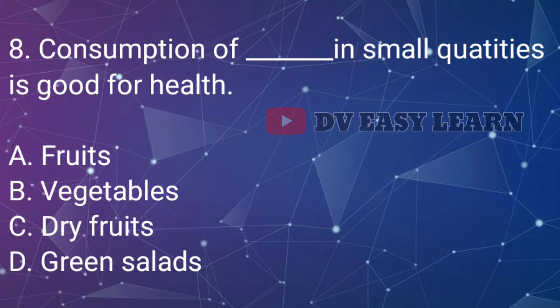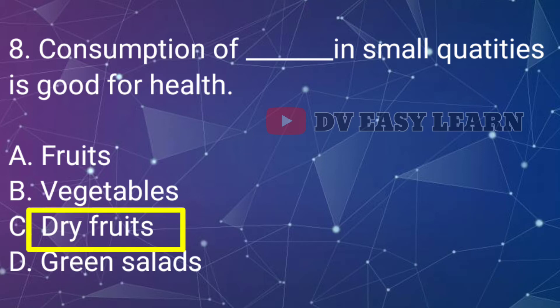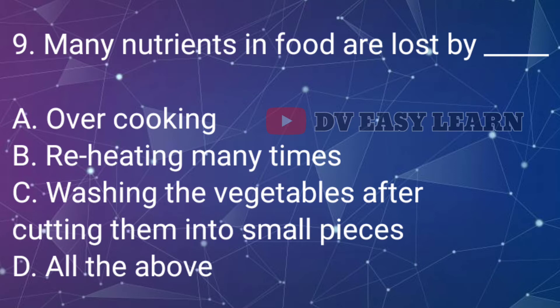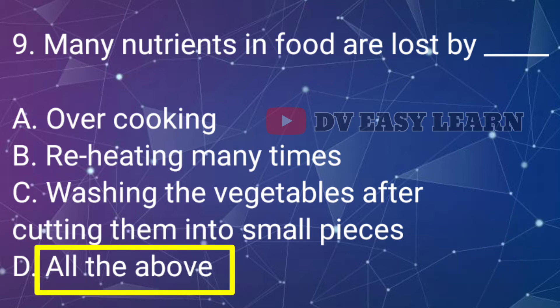Question No. 8: Consumption of what in small quantities is good for health — Correct answer: Dry fruits. Question No. 9: Many nutrients in food are lost by — Correct answer: All the above — overcooking, reheating many times, and washing vegetables after cutting them into small pieces.